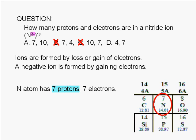Therefore, choice D is wrong. Since an atom is neutral, a nitrogen atom also has 7 electrons.